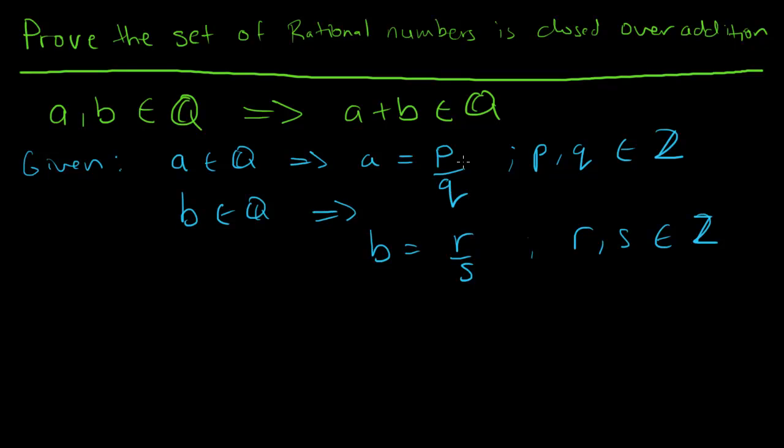I want to show that this implies the rational numbers are closed over addition. What I'm going to do is take this given and represent it in a different way that will allow me to easily show that the sum of two rational numbers is also a rational number.